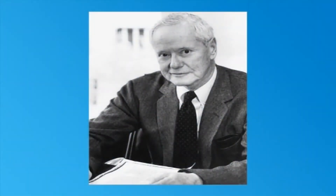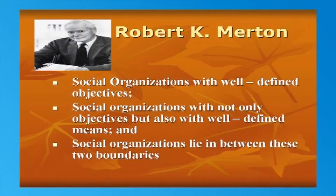Robert K. Merton's threefold classifications of social organizations are: (a) social organizations with well-defined objectives, (b) social organizations with not only objectives but also well-defined means, and (c) social organizations which lie in between these two boundaries. It is contended that a vast majority of the people stick to (b) while a small minority take to (a) or (c). In conclusion, we can say the more the conformity, the less the criminality, and vice versa — the less the conformity, the more the criminality.